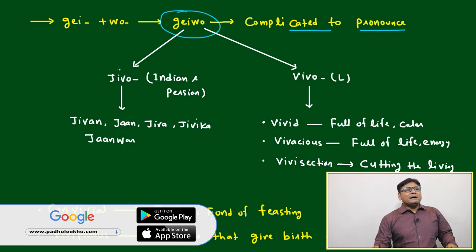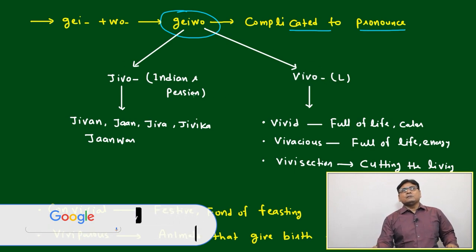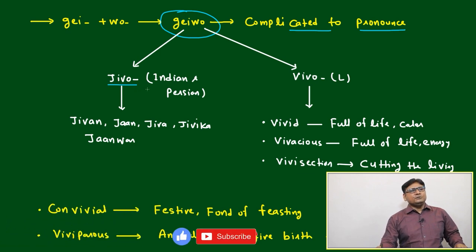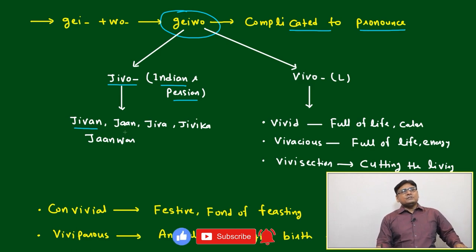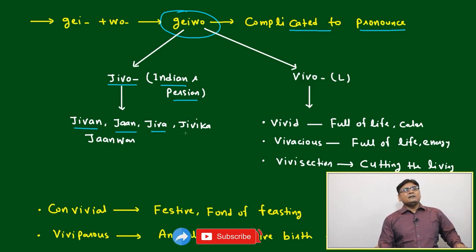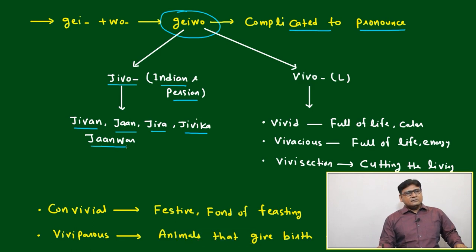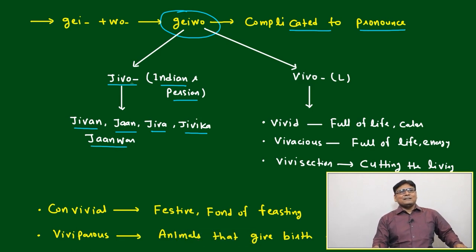This root word is divided into two different systems. One is Jeebo — Jeebo is Indian and Persian. From that root word we already know Jeevan, Jaan, Jeeva, Jeevika, and Jaanvar also, which is one who is having the Jaan.